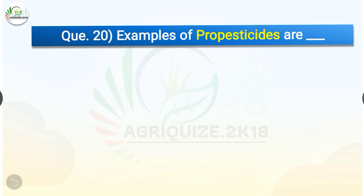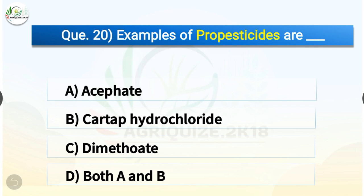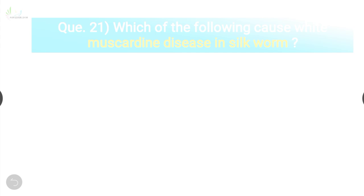Question number twenty: examples of pro-pesticides are — options are acephate, cartap hydrochloride, dimethoate, or both A and B. The correct answer is option D, both A and B. Acephate and cartap hydrochloride are pro-pesticides. A pro-pesticide is a pesticidally active compound which in its original form is inactive and is transformed into an active state by a plant, animal, or microorganism.